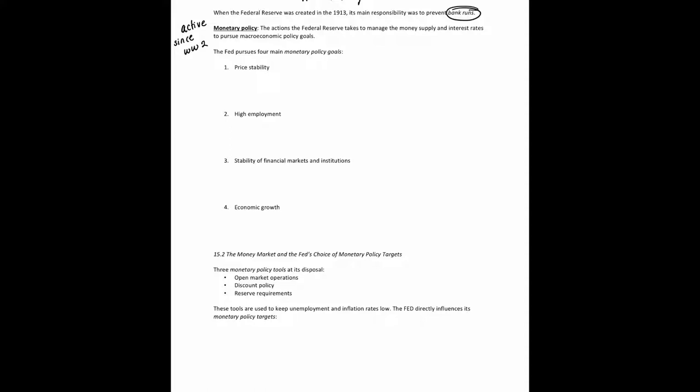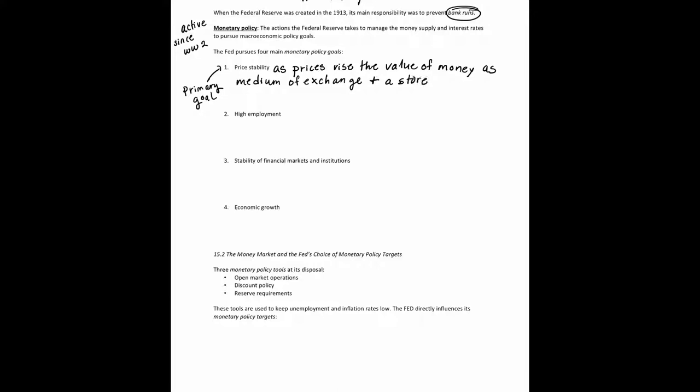The first goal is price stability, which is the primary goal of the Fed. When it comes to price stability, as prices rise, the value of money as both a medium of exchange and a store of value — both of which we discussed last chapter — is eroded or decreases.